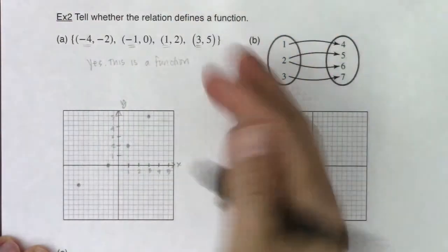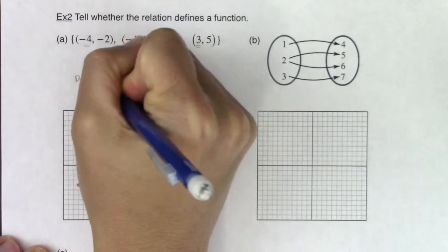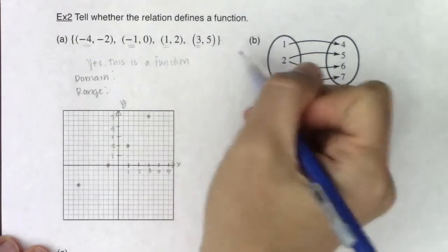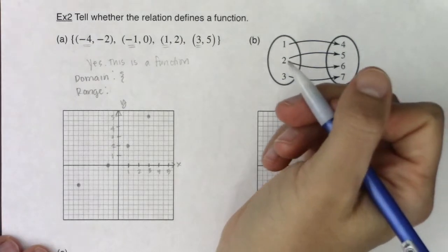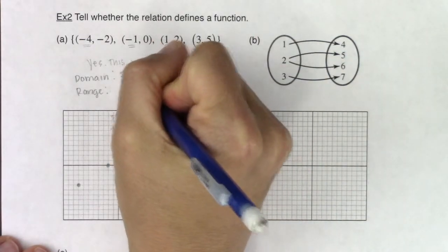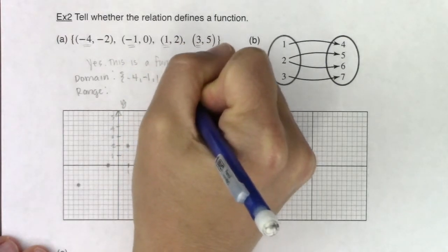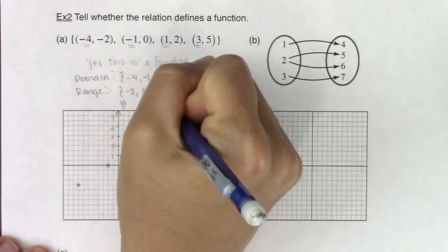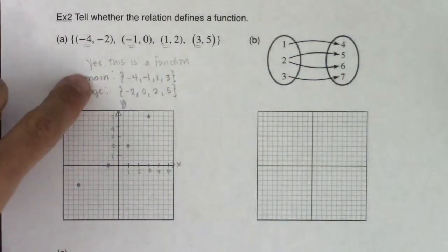Let's talk about domain and range. Since I just have ordered pairs and not intervals, I'll use set notation. The domain is all the x-coordinates: negative four, negative one, one, and three. The range is all the y-values: negative two, zero, two, and five. When we get to continuous functions, these will turn into intervals.